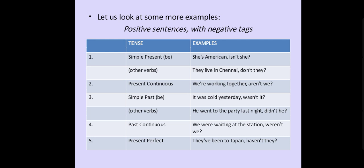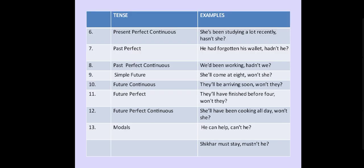Present perfect — 'They have been to Japan, haven't they?' Present perfect continuous tense — 'She has been studying a lot recently, hasn't she?' Past perfect — 'He had forgotten his wallet, hadn't he?' Past perfect continuous tense — 'We had been working, hadn't we?'